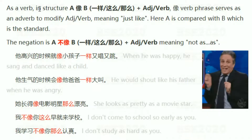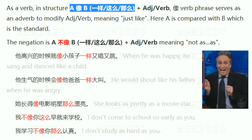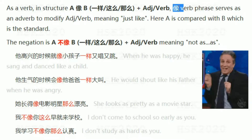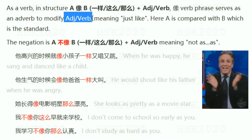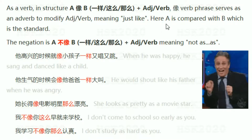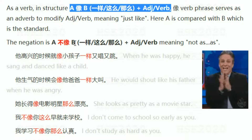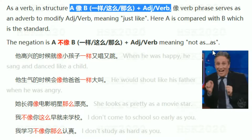As a verb, 像 appears in the structure: A 像 B 一样/这么/那么. The 像 plus verb phrase serves as an adverb to modify an adjective or verb, meaning 'just like.' A is compared with B, which is the standard. The negation of this structure is 不像 B 一样/这么/那么, meaning 'not as ... as.'